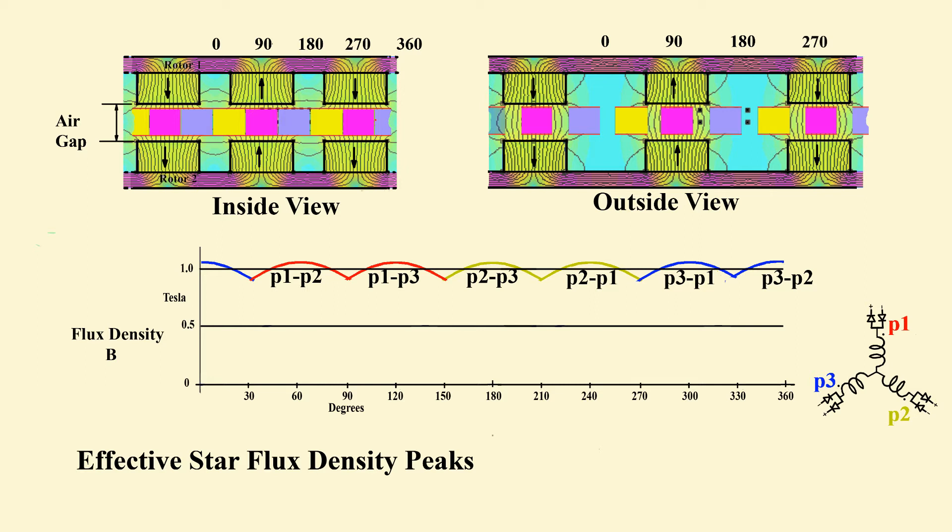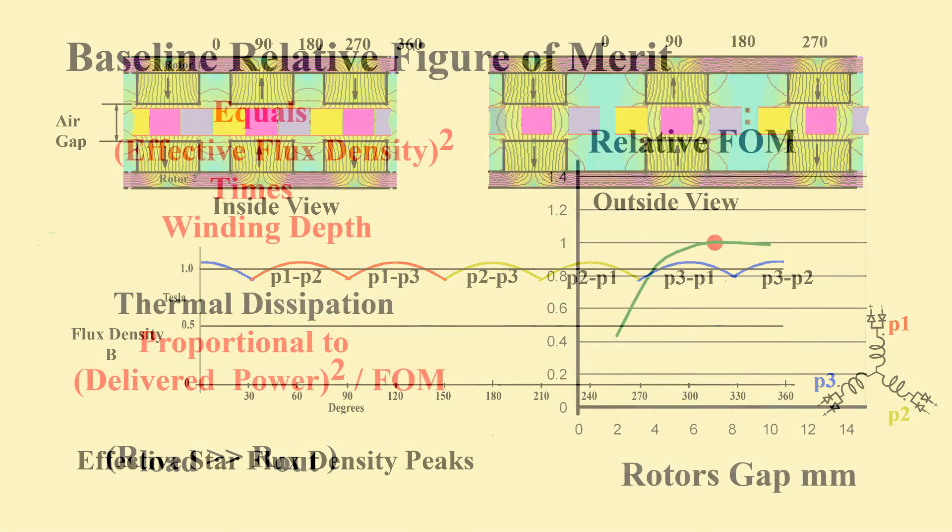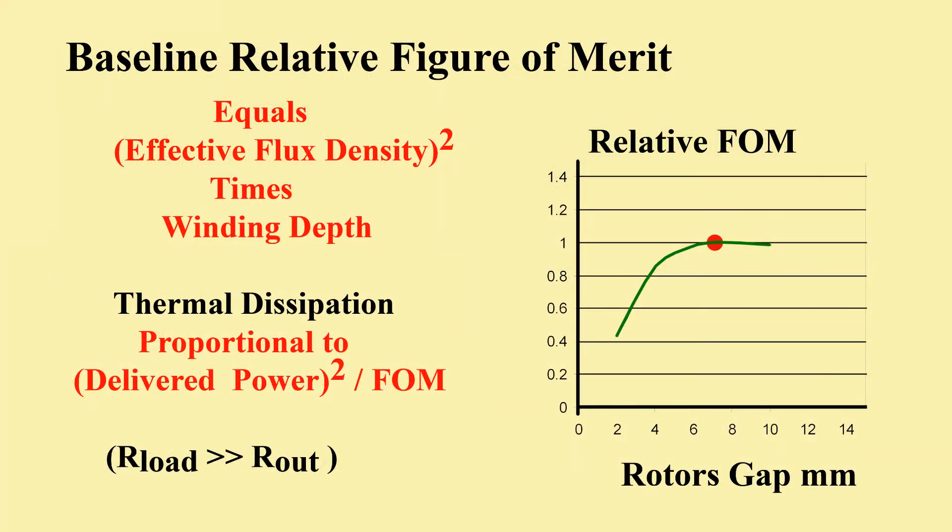A suitable figure of merit is the square of the machine's loaded output voltage divided by its output resistance. As previously discussed, it gives a way to estimate ohmic dissipation in the output windings at any delivered power. Provided winding eddy loss has been eliminated, it is also a measure of power conversion efficiency. Calculation of relative figure of merit between the immediate options only requires the peak effective flux density and the winding depth, all other factors being common to the baseline design.